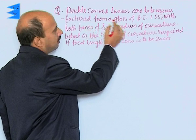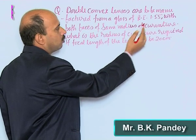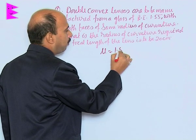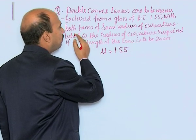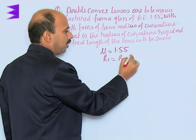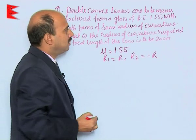Double convex lenses are to be manufactured from a glass of refractive index 1.55. You are given mu equals 1.55 with both faces of same radii. This means R1 equals R and R2 equals minus R by using sign convention.